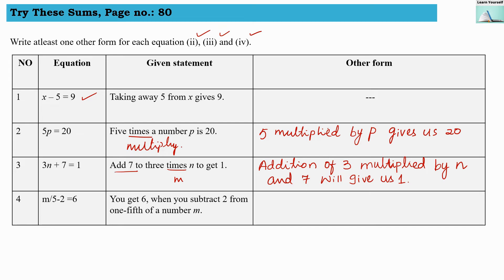Fourth equation is m divided by 5 minus 2 gives us 6. So here they said that you get 6 when you subtract 2 from one-fifth of a number m. So you get 6. So they have written here answer first. We will write the answer later.